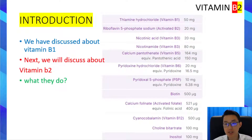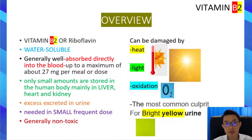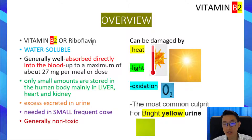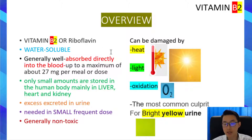Previously we have discussed about vitamin B1 and its function. Today's topic will be focused on vitamin B2. We will begin with an overview. Vitamin B2 is also called riboflavin. Just like vitamin C and vitamin B1, it is a water-soluble vitamin. It is generally well absorbed directly into the bloodstream, up to a maximum of about 27 mg per meal or per dose. In other words, vitamin B2 has an upper limit with regard to how much we can absorb in a given time.